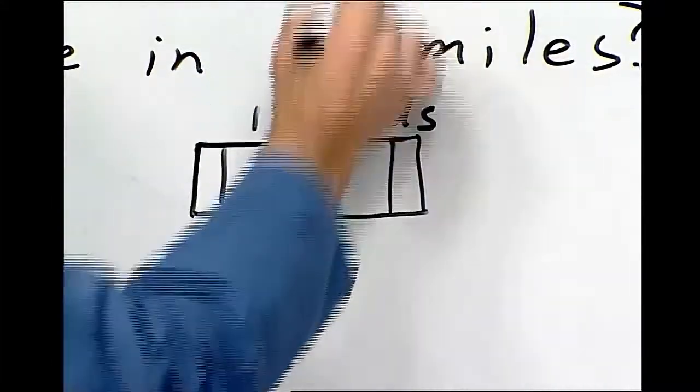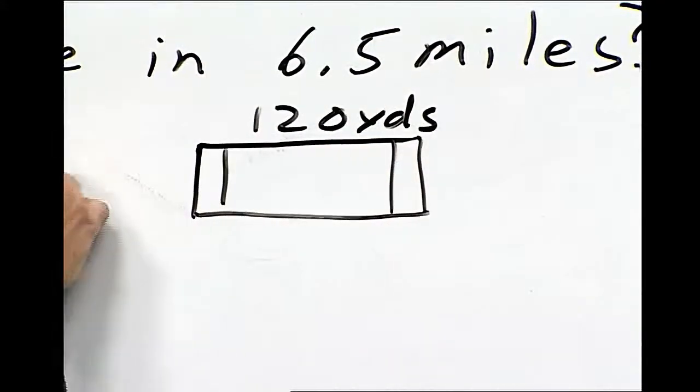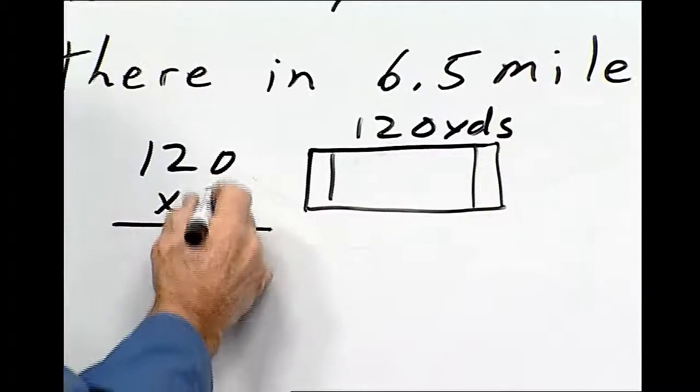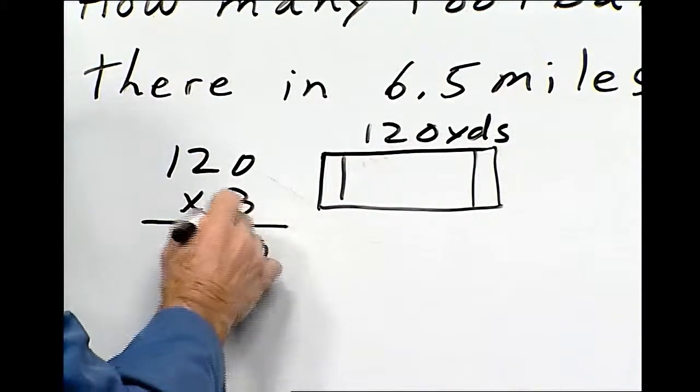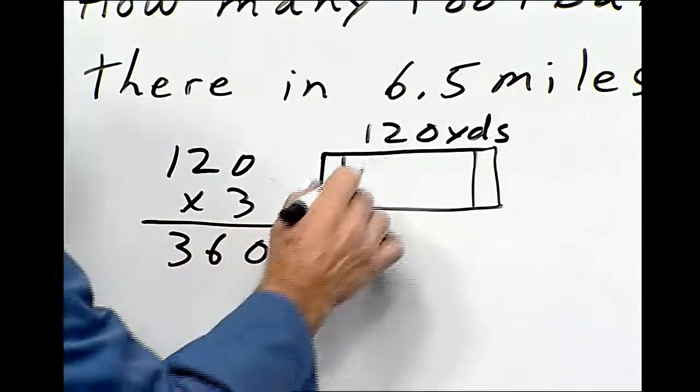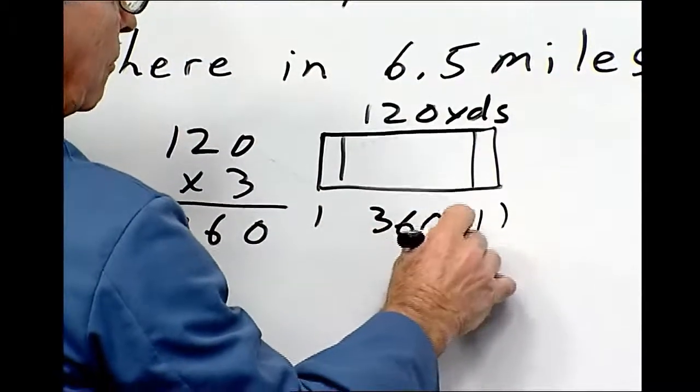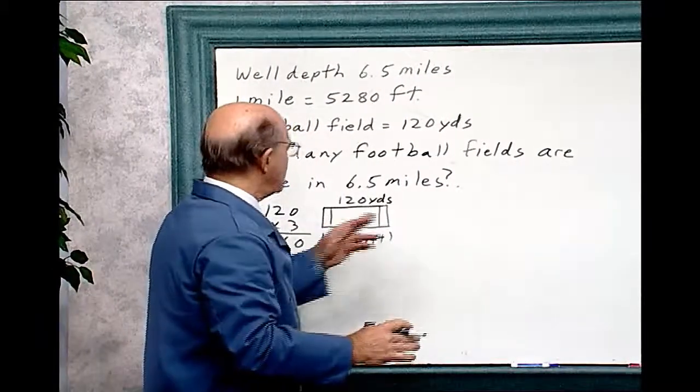Now, we're dealing with feet, so we have to convert the 120 yards into feet. And 120 times 3 is 3 times 0 is 0, 3 times 2 is 6, 3 times 1 is 3. So this distance, then, is 360 feet, the length of one football field with the end zones.